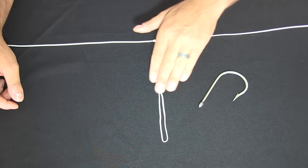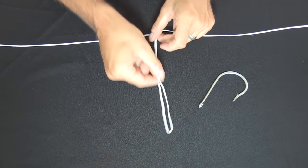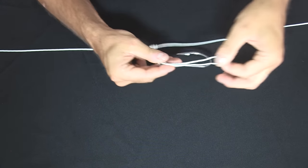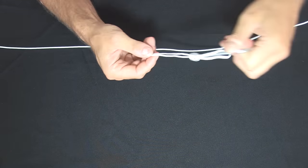Now to attach our hook to our dropper loop, the most common way is to simply grab the loop, go through the hook eye and over the end of the hook and pull down.